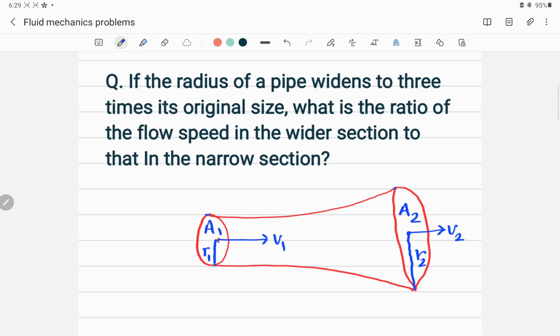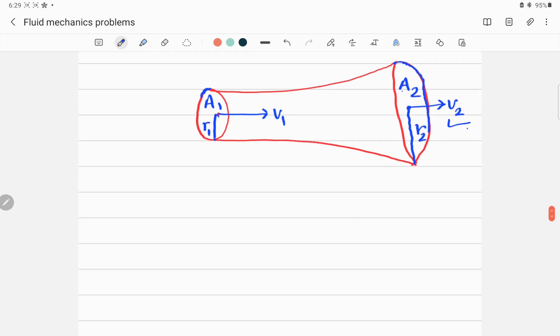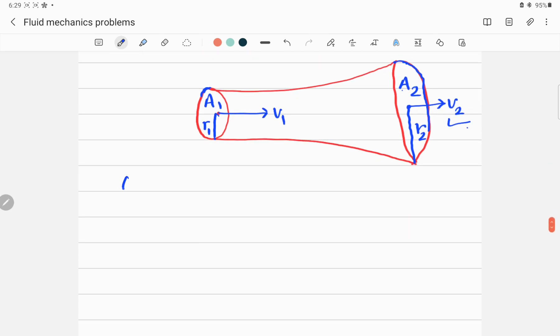If A1 is the cross-sectional area of this cross section on this side, and the velocity right here is v1, and the area of the cross section here at this side is A2 with velocity v2, then according to the continuity equation...